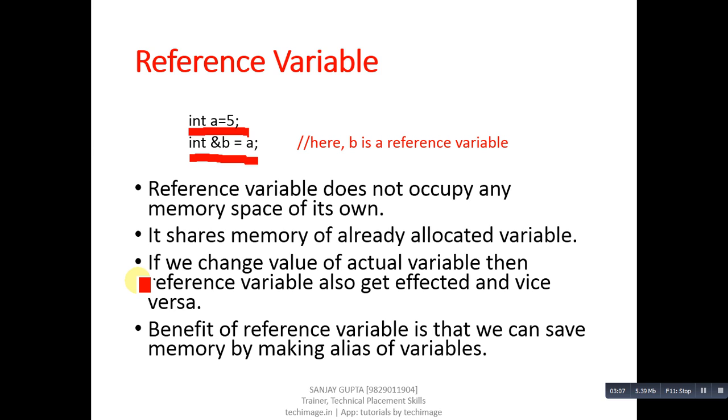Benefit of reference variable is that we can save memory by making alias of variables. It means we do not have to provide extra memory space for reference variable. We can make clones of already declared variables and those clones are known as reference variables.